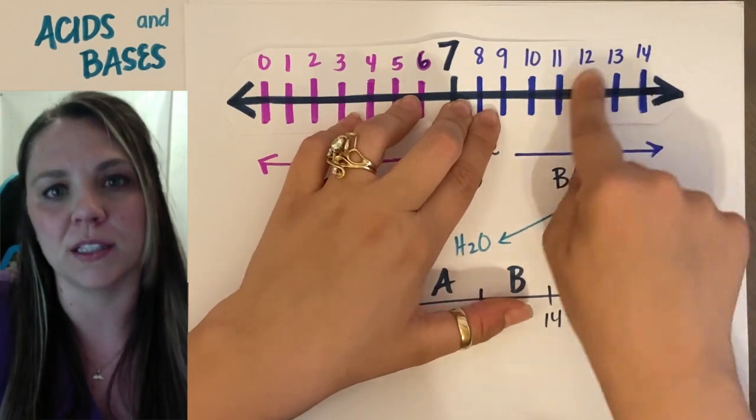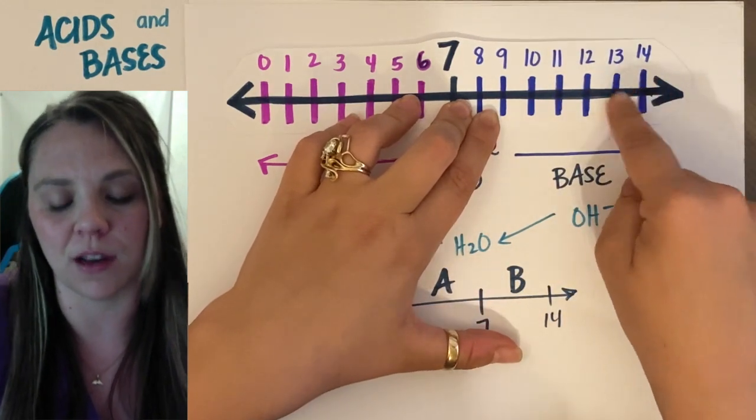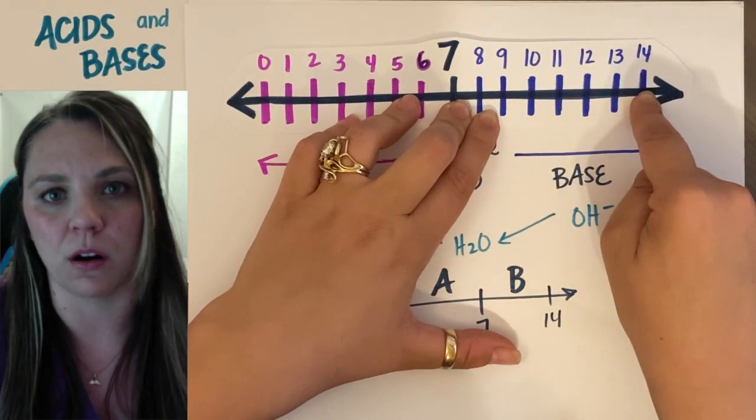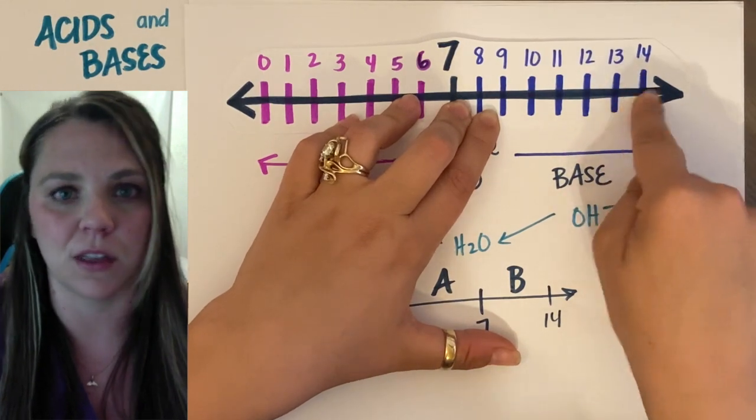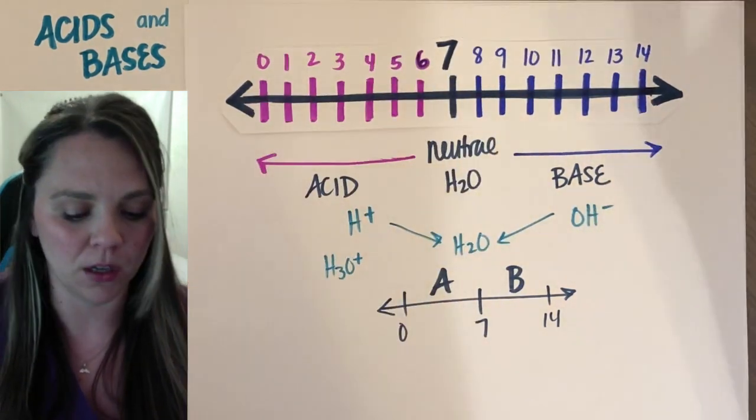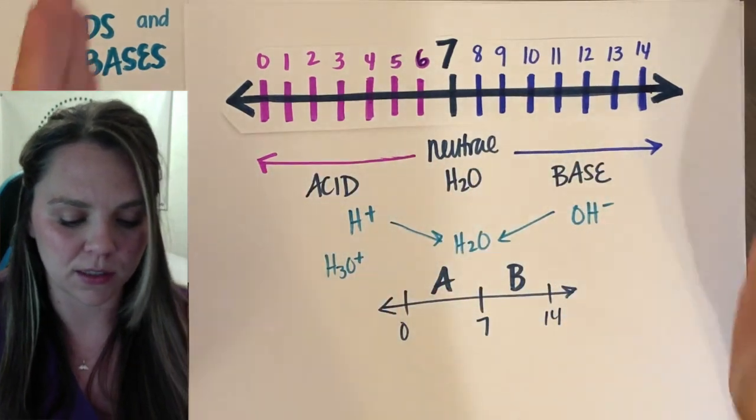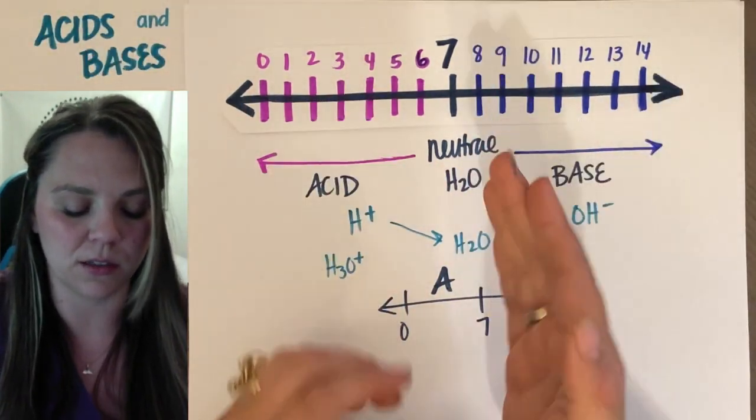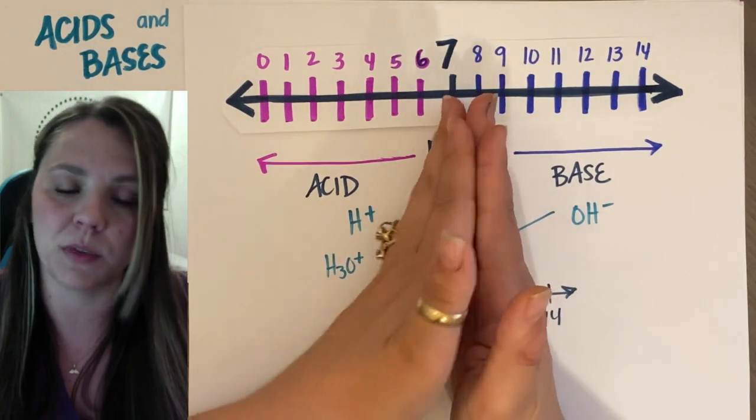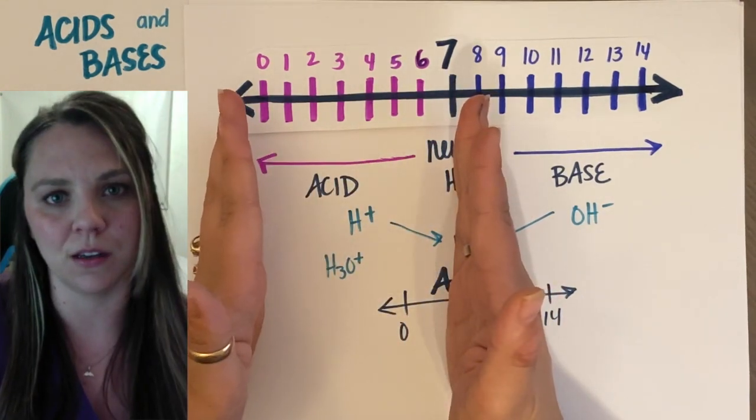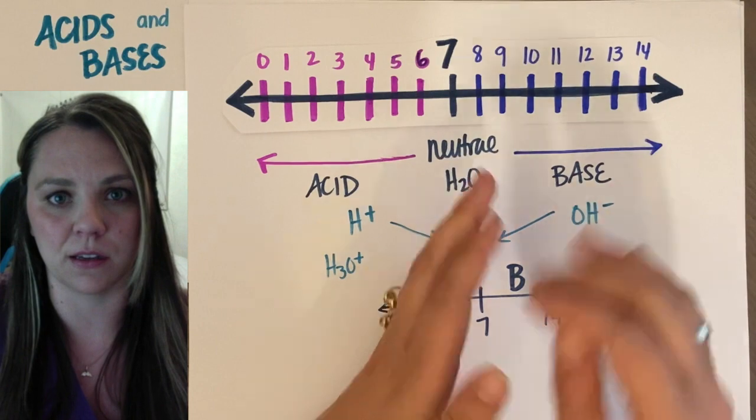But if you're working into the 13-14 range, you're talking about oven cleaner or drain cleaner, which would be why these things are so poisonous. Alright. So hopefully we understand this part. So 7 is neutral. If I have a pH that's below 7, it's acidic. pH above 7, it's basic.